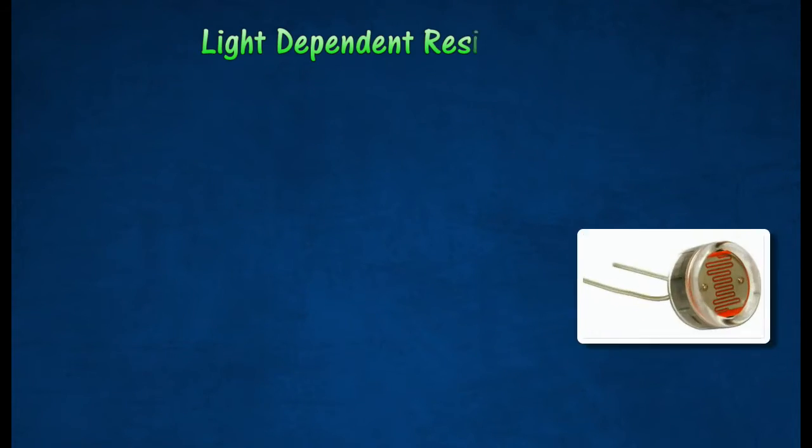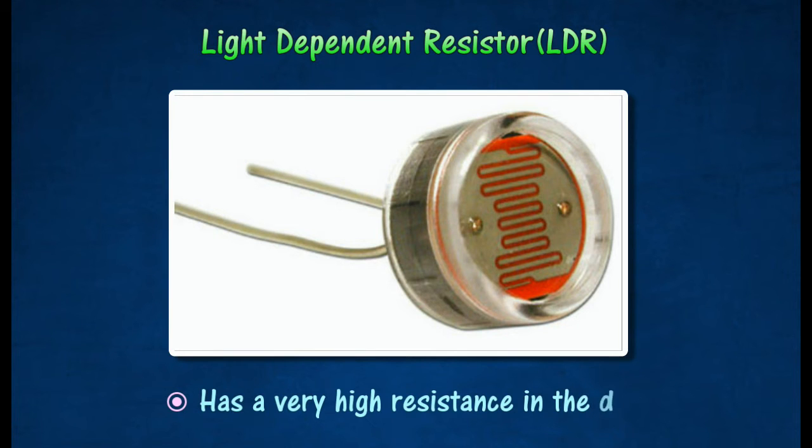A light-dependent resistor has a very high resistance in the dark. Conversely, an LDR has a very low resistance in bright light.